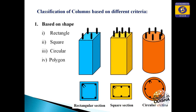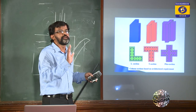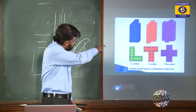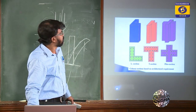Now I will discuss the classification of columns. Based on shape: rectangle, square, circular, and polygon. There are also special cross-sections — T-column, L-column, plus-shape, or any polygonal cross-section — used for architectural requirements, sometimes in temples or specific occasions.